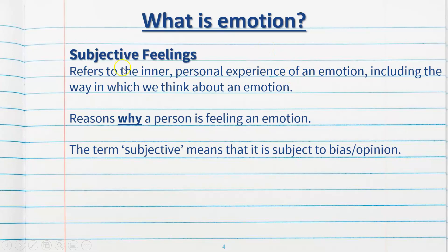Next, we have subjective feelings. This refers to the inner personal experience of an emotion, including the way in which we think about an emotion. It's the reasons why a person is experiencing or feeling that particular emotion. The term subjective means that it's subject to bias or subject to someone's opinion — only that person knows why they're feeling happiness or sadness, for example. It's unique to them. What makes me happy won't necessarily make you happy, and people often interpret and process emotions slightly differently.